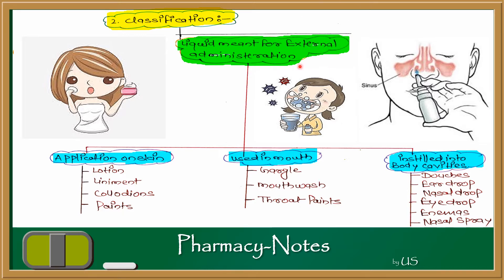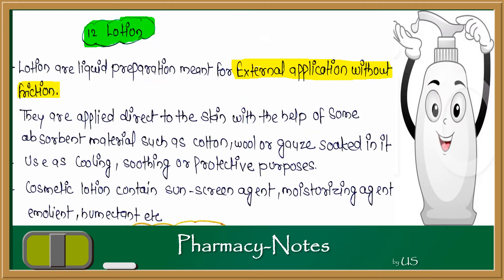In this part, we will talk only about what we use topically — monophasic dosage forms which are applied topically, like lotions, liniments, collodions, and paints.